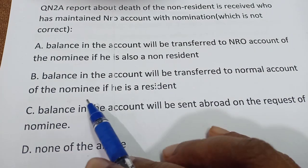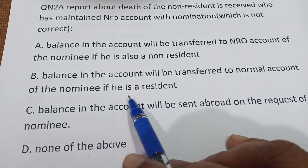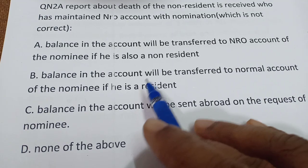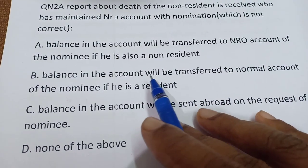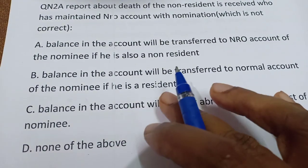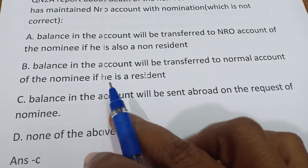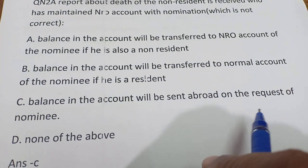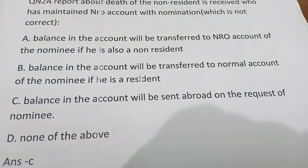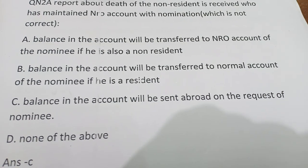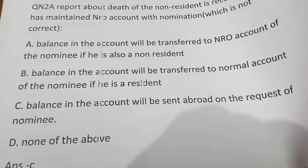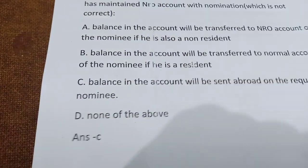Option B states balance will be transferred to a normal account of the nominee if he is a resident. If the person is a resident, there is no restriction on credit, so it can be transferred to a resident account — but this option is wrong. Option C says balance will be sent abroad on the request of the nominee. We should not send the amount abroad on request; we have to hand over the amount to the nominee. So that is the wrong option.